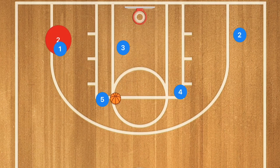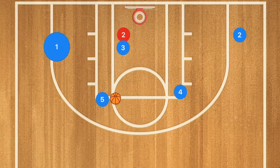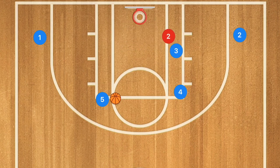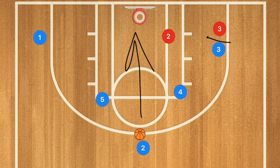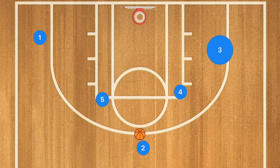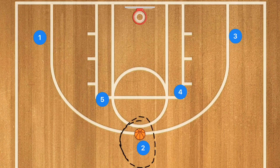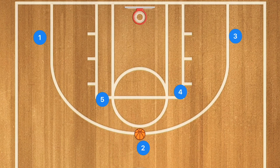If Player 3 is not open — say the defense continued through and stayed with him — Player 1 will stay in place and Player 3 will continue through, setting a screen on Player 2's man. Player 2 will use that screen and pop up to the point, where Player 5 passes to him. Player 2 could take that shot, and if not, Player 3 fills out in that spot. Now Player 2 has the option to pass to Player 5 or Player 4, cycling through the motion offense.